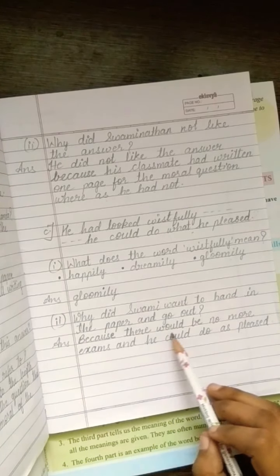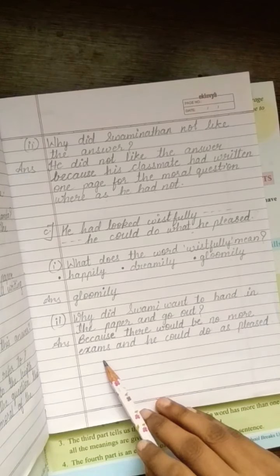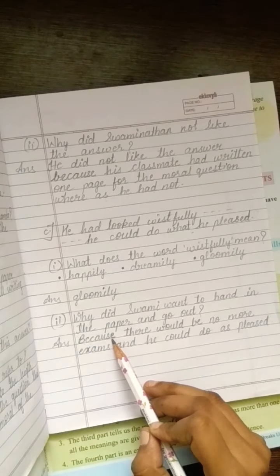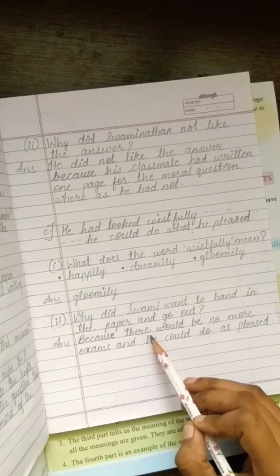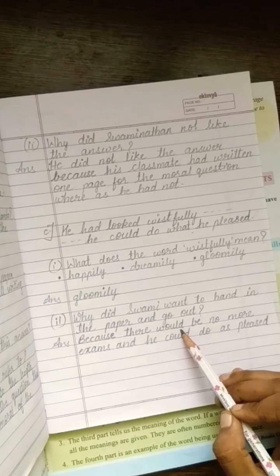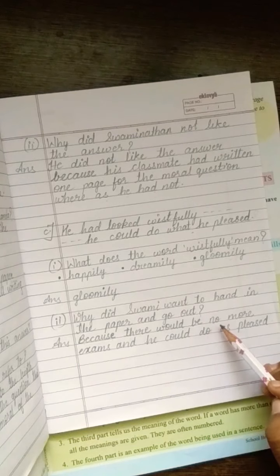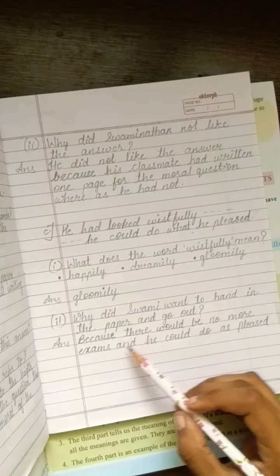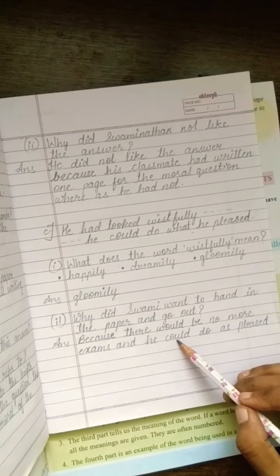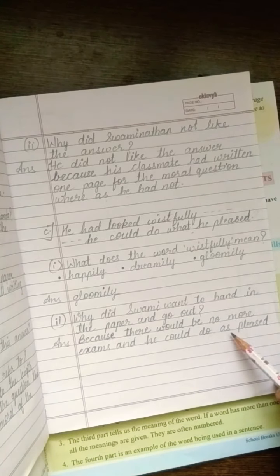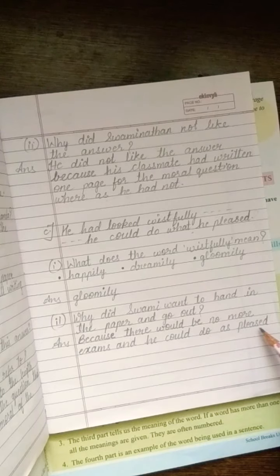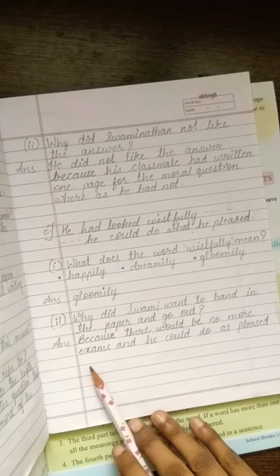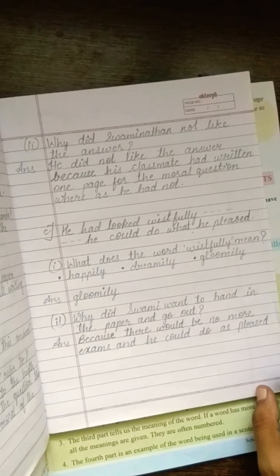Answer. Because there would be no more exams and he could do as pleased. B-E-C-A-U-S-E Because T-H-E-R-E there. W-O-U-L-D Would B-E be N-O no M-O-R-E more. E-X-A-M-S Exams And he C-O-U-L-D Could do as P-L-E-A-S-E-D Pleased. Because there would be no more exams and he could do as pleased.